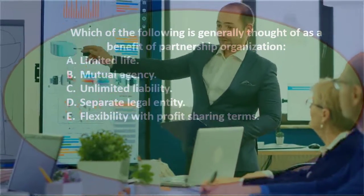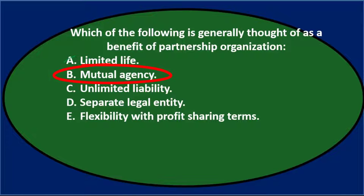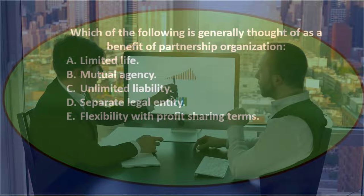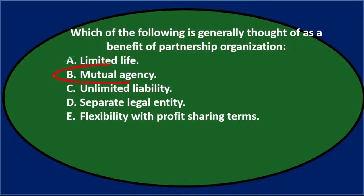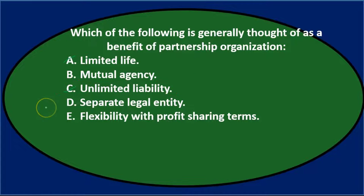The problem is that if you vote on everything it can slow things down — you basically have a committee. And if one individual is making decisions without the other, that can cause problems by committing the entire partnership. Option C, unlimited liability, is a characteristic but is definitely considered not good. Option D, separate legal entity — a partnership is not a separate legal entity; a corporation is.